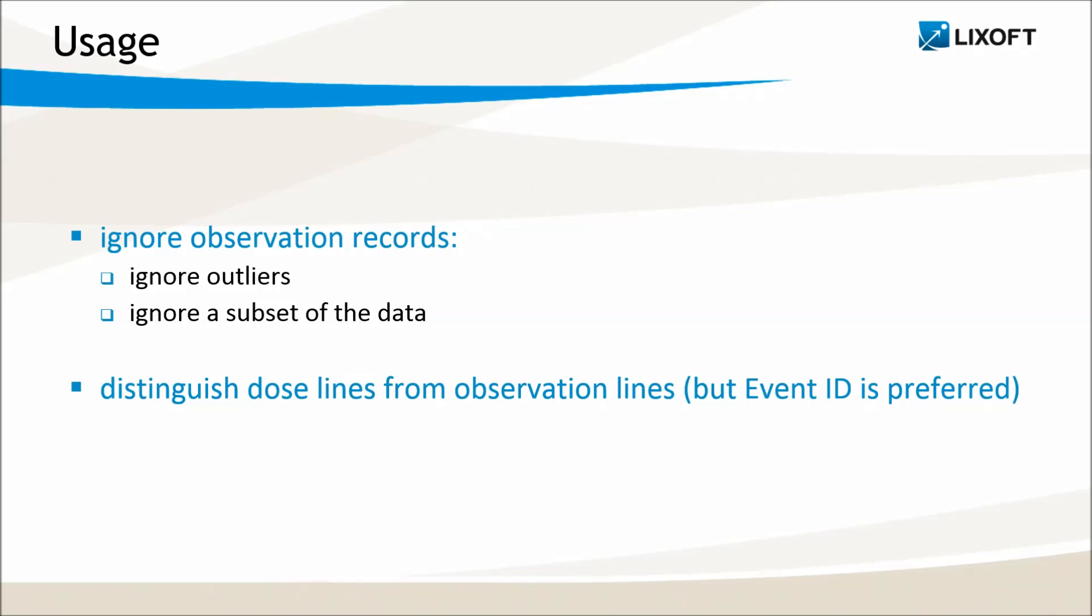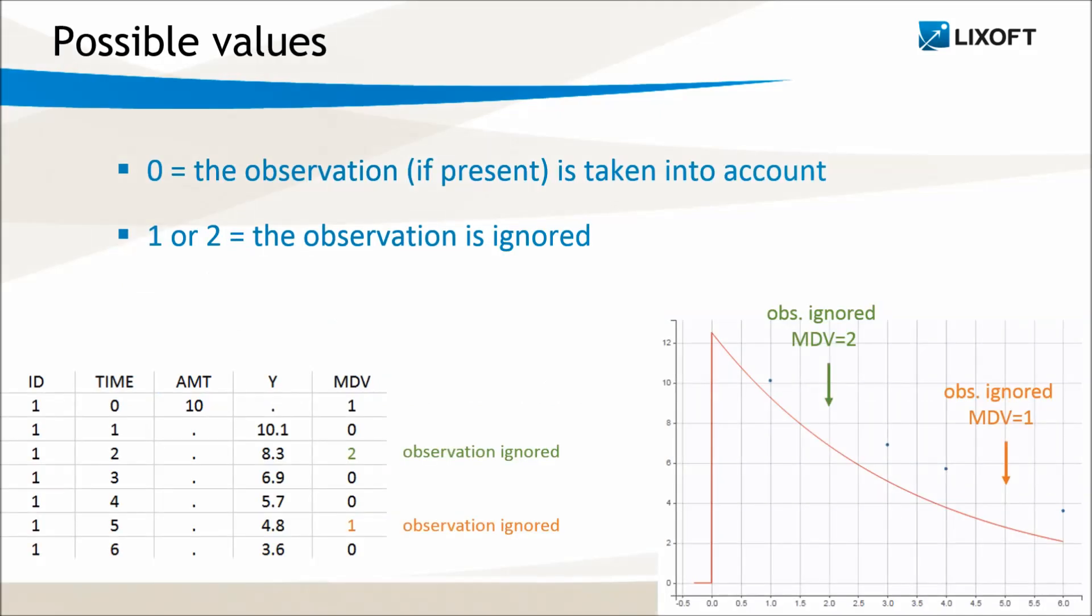The ignored observation column can also be used to distinguish dose lines from observation lines, although the event ID is preferred for that. The ignored observation column can take only three values.